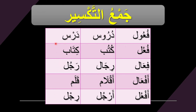These are the singular forms of these plurals. For the pattern fu'ul: durus, meaning lessons, comes from dars, meaning a lesson. For fu'ul: kutub, meaning books, comes from kitab, meaning one book. For fi'al: rijal, meaning men, comes from rajul, meaning a man.